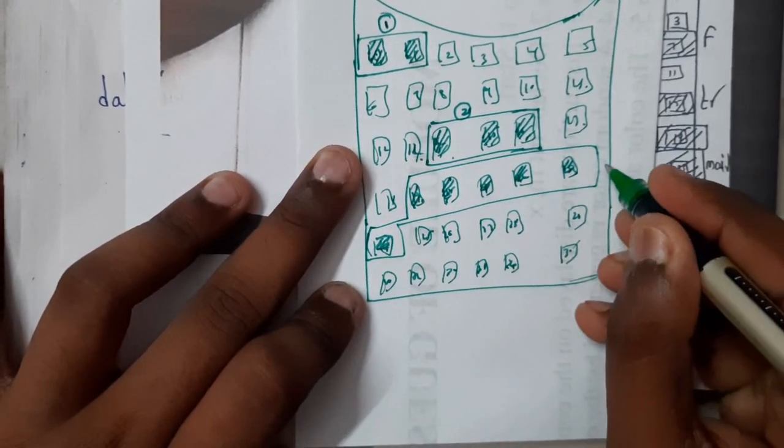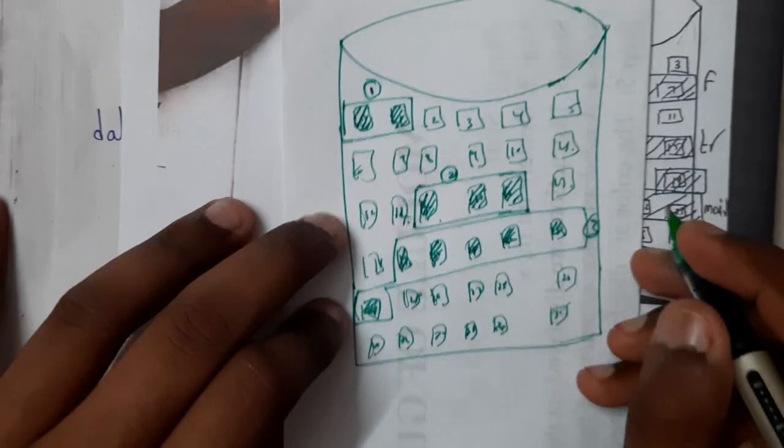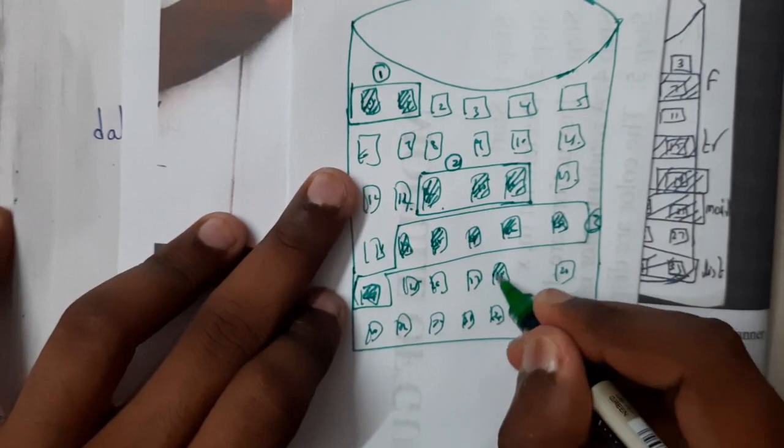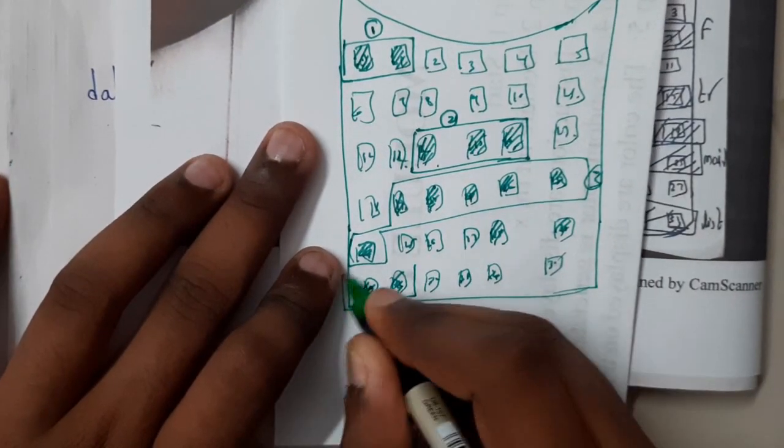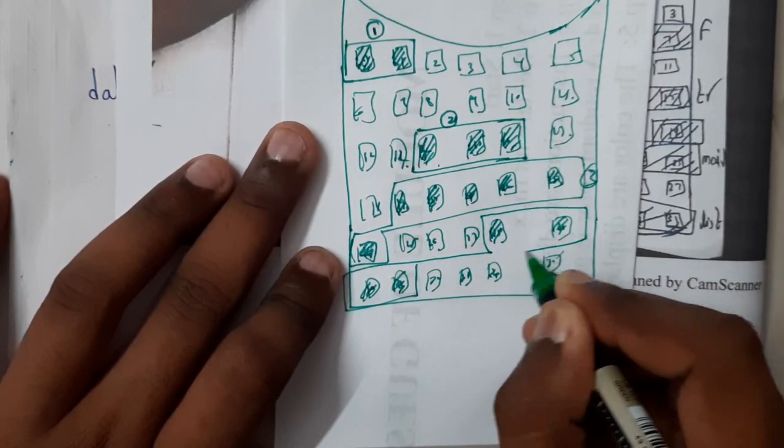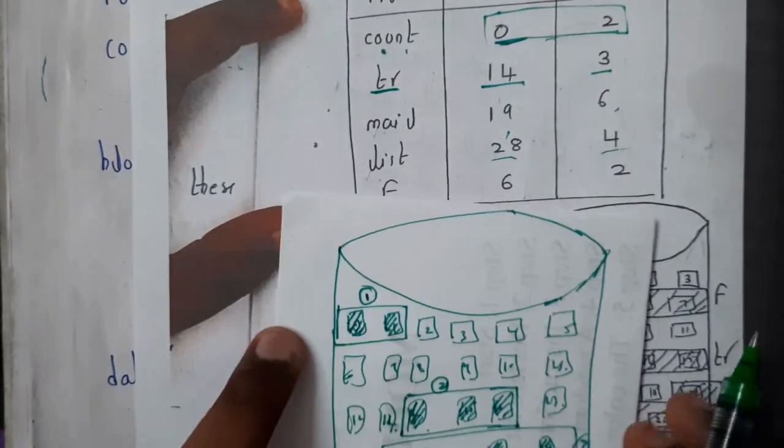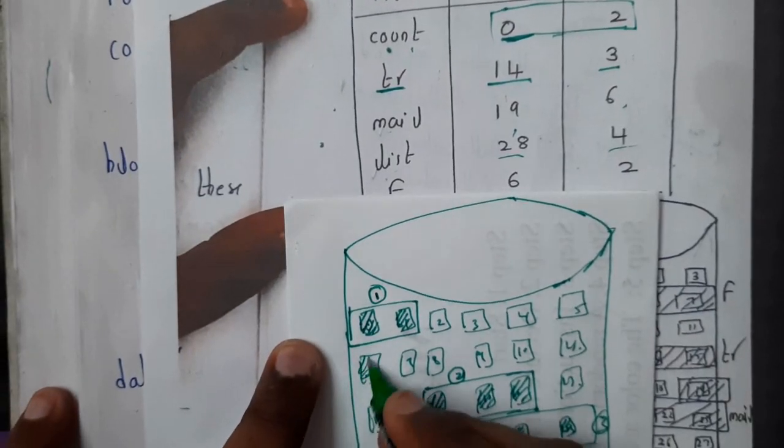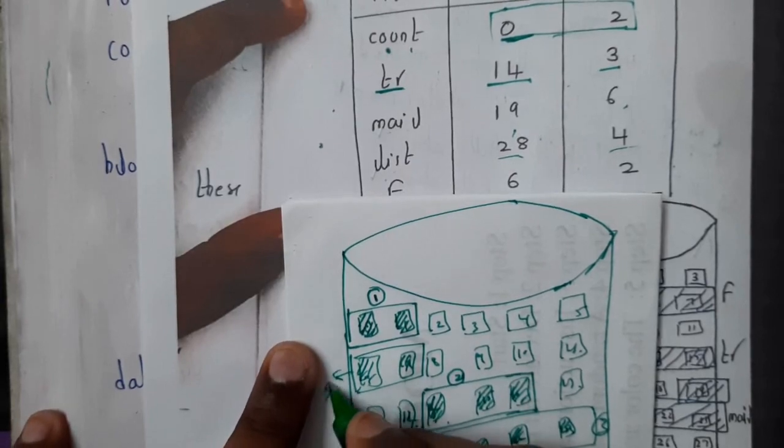So this will be your third file. Next we have 'list' which starts at 28. So here it is 28, 29... this will be your fourth file. Similarly, the last one is at position 6 with length 2, so it starts at 6 - blocks 6 and 7. This will be your fifth file. In this way, the contiguous allocation works.